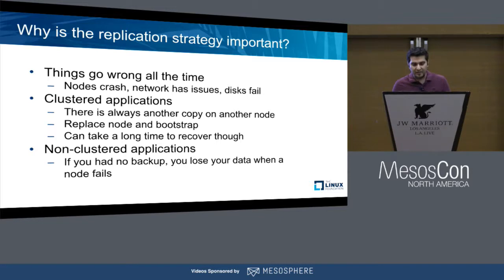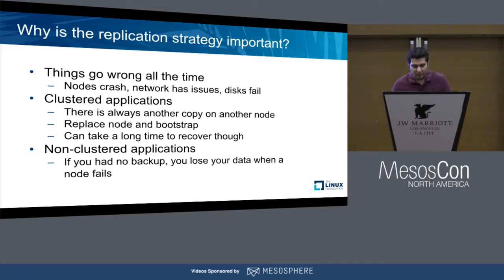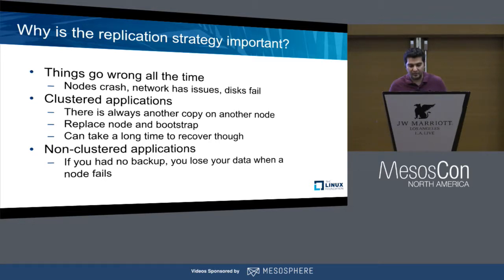You might ask why this replication strategy is important. Bad things happen all the time — your nodes could crash, your network could have issues, disks could fail, or power outages could take down entire racks. For applications that do their own replication, there's always another copy on another node, so they can continue to serve I/O, and you can bootstrap and repair data back. For non-clustered applications using local storage with no backup, if a disk fails you will lose your data and cannot bring your service back up.